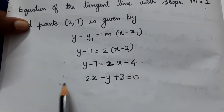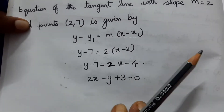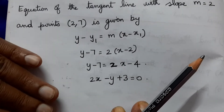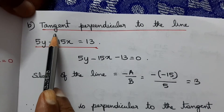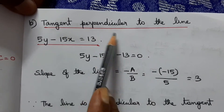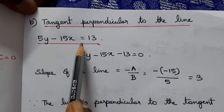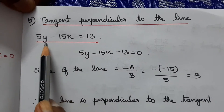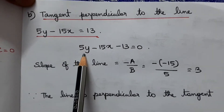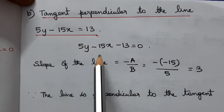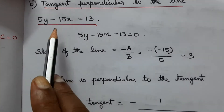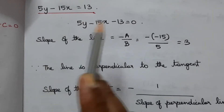So the equation of the tangent parallel to the line 2x - y + 9 = 0 is 2x - y + 3 = 0. Now for Condition 2: tangent perpendicular to the line 5y - 15x = 13. For perpendicular lines, m₁ × m₂ = -1, where m₁ is the slope of the given line and m₂ is the slope of the tangent.